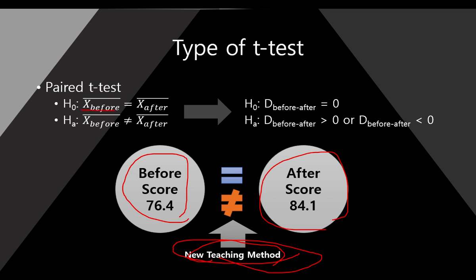So here, the statistical hypothesis is before, X_before bar—this is a before score—and X_after bar is after score. We want to know if they're the same or not. So it is changed like this, same thing.